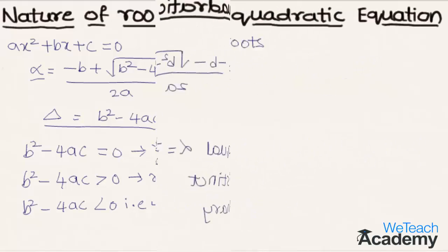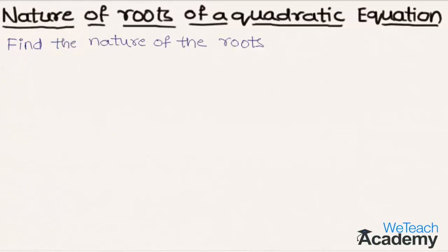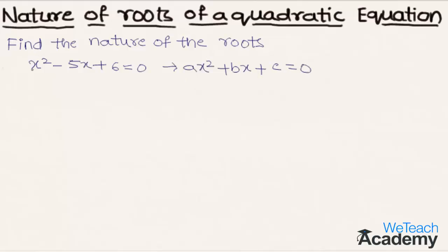Now let us solve an example. Find the nature of the roots of the quadratic equation x square minus 5x plus 6 equal to zero. Comparing with ax square plus bx plus c equal to zero, we get a equal to 1, b equal to minus 5, and c equal to 6.